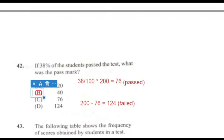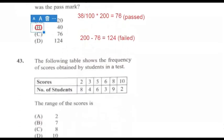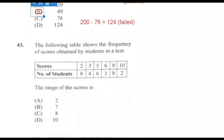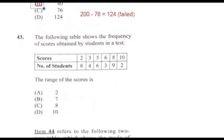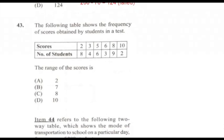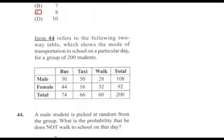Question 43: The following table shows the frequency of scores obtained by students in a test. What is the range of scores? Remember, range is the difference between the highest and the lowest number. So it would be the difference between 10 and 2, which gives us 8. Answer for 43 is C.